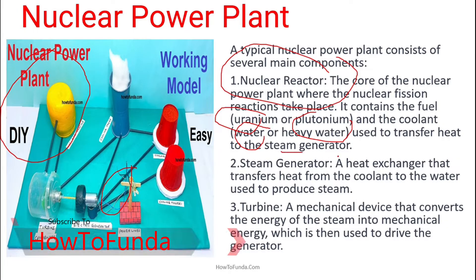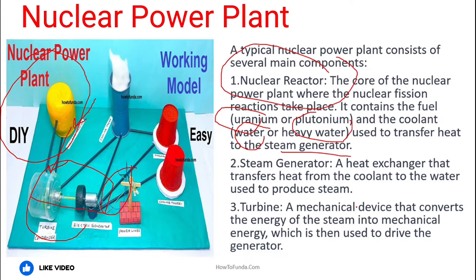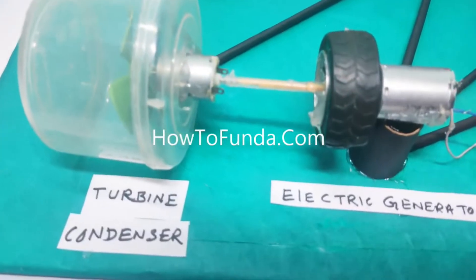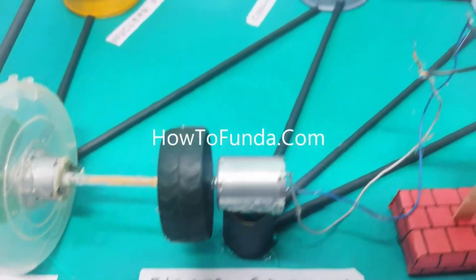Once heat is generated, we use pipes to send that heated water to the steam generator. The steam generator exchanges heat from the coolant to the water to produce steam.